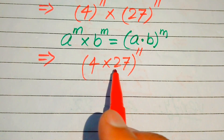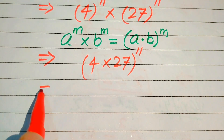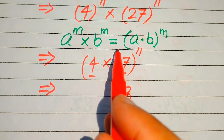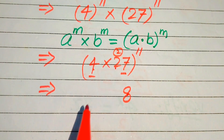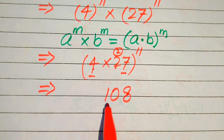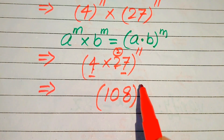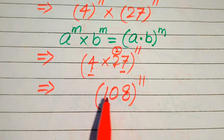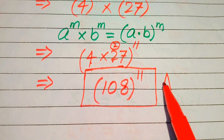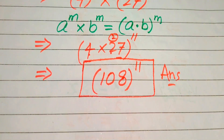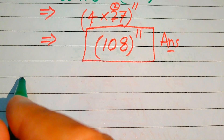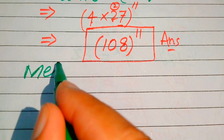Our next target is to multiply these two numbers. 4 times 7 is 28, we write 8 and carry 2; 4 times 2 is 8, and 8 plus 2 is 10. So 4 times 27 equals 108, giving us 108 to the power of 11. This is the final simplified answer from the first method. Now we move towards the second method.